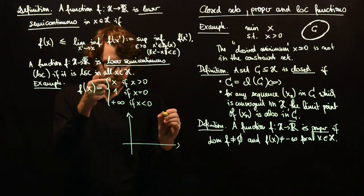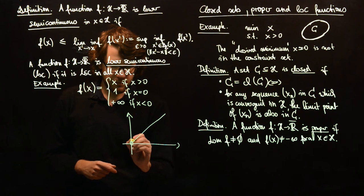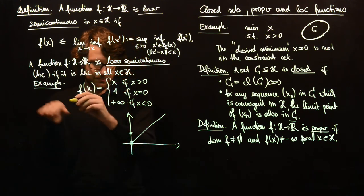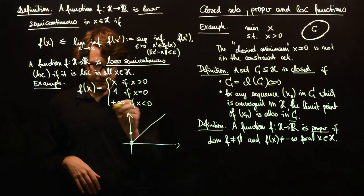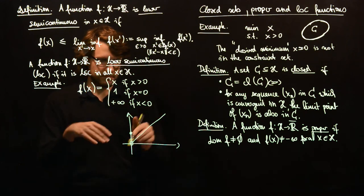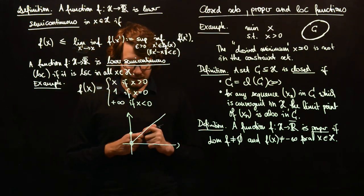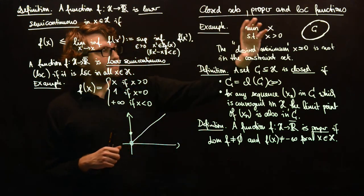We have x here, then we have a hole here, we have this value here, and then we have plus infinity which is above everything. So I can't write it into this figure here.